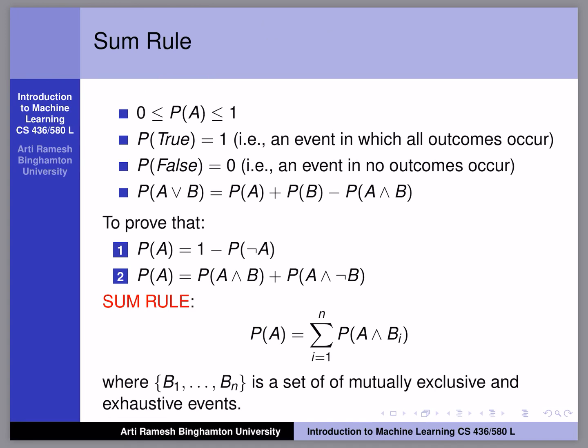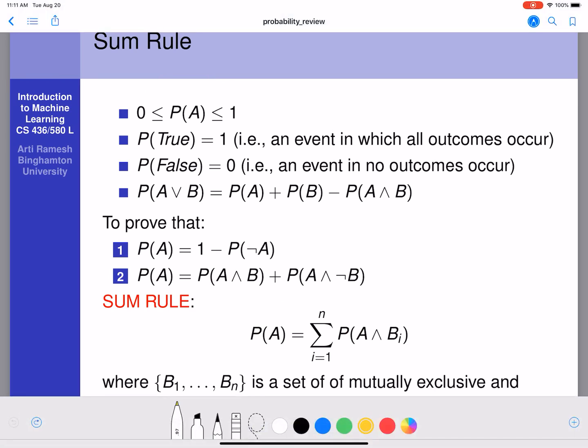And then we also have another rule here. P of A equals P of A and B plus P of A and not B, right? So now we are introducing another event, B. So we want to calculate P of A.